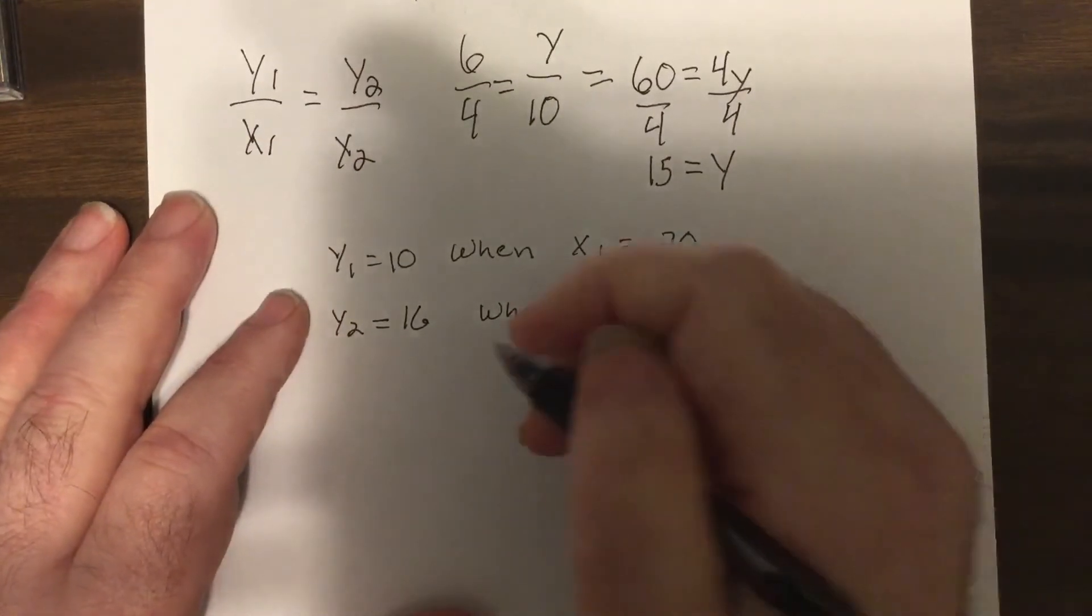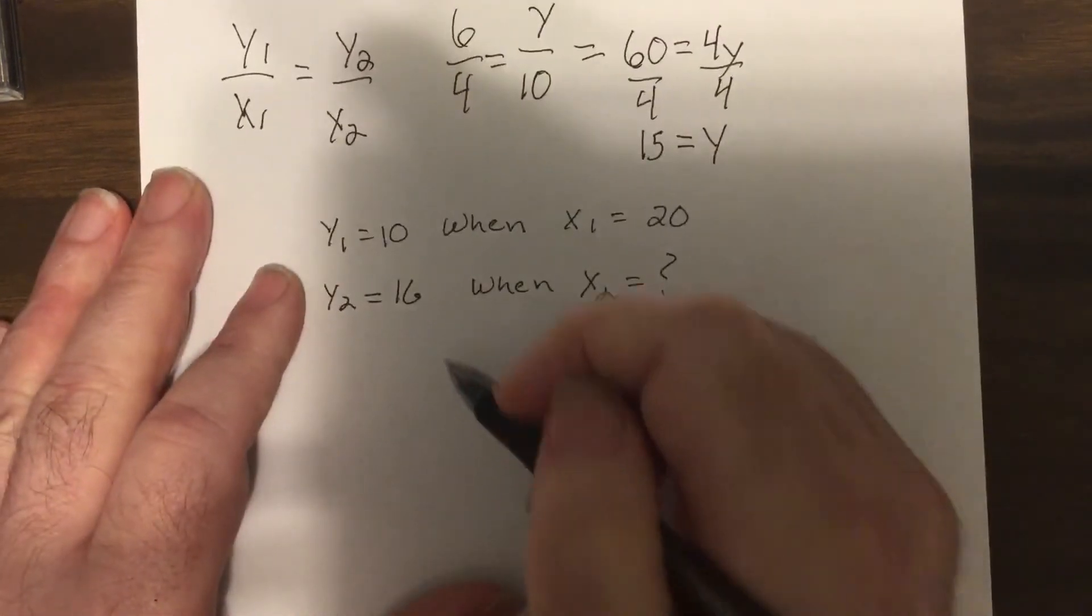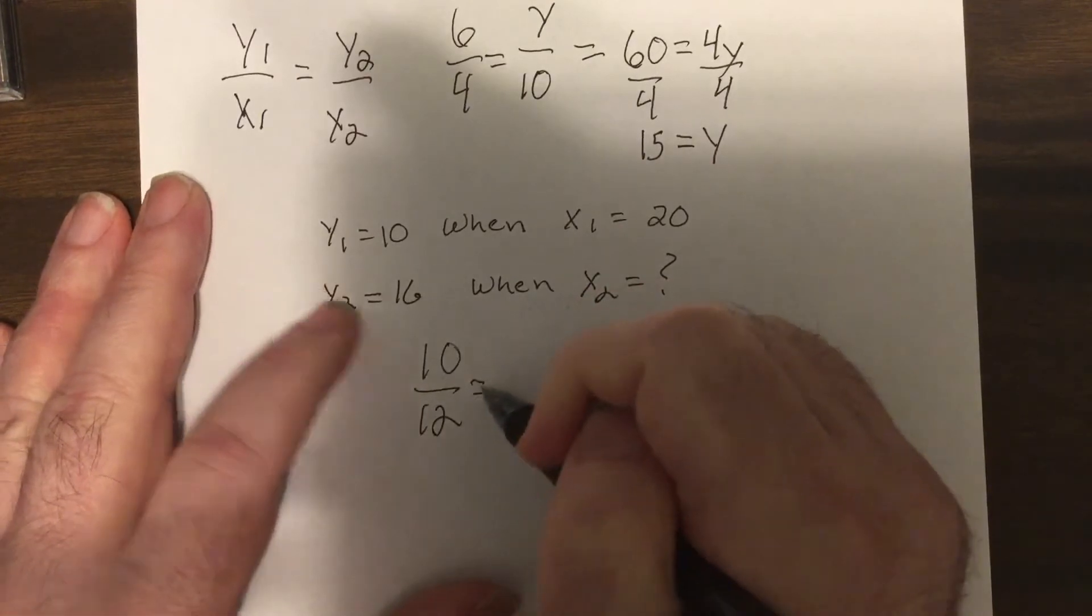It varies directly, same problem. So we go 10 to 20 is 16, don't know, so it'd be 10x.